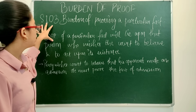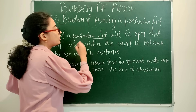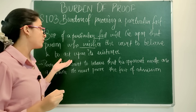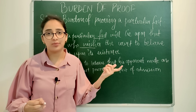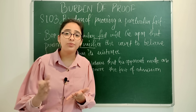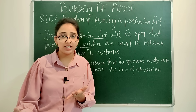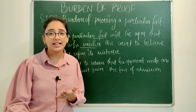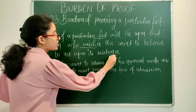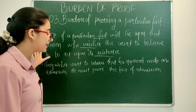Section 103 states that the burden of proving a particular fact will lie upon that person who wishes the court to believe in its existence and to act upon it. Whatever party wants to prove a particular fact in court, the burden lies upon them — the party who wants the court to believe in the existence of that fact must bear the burden to prove that particular fact.